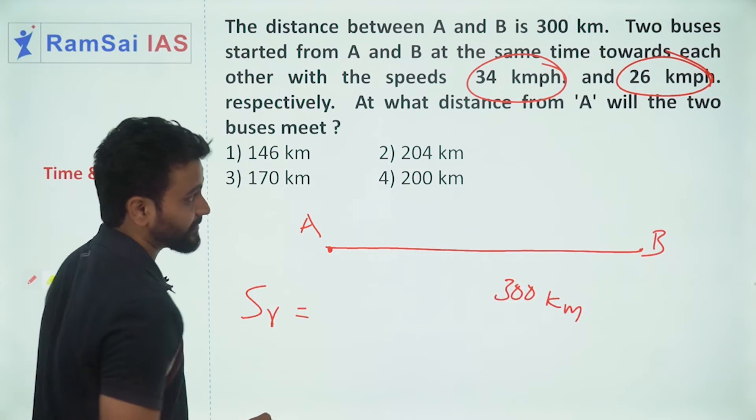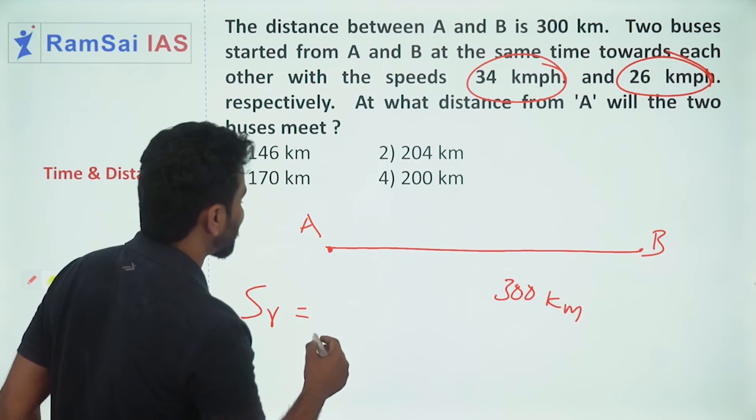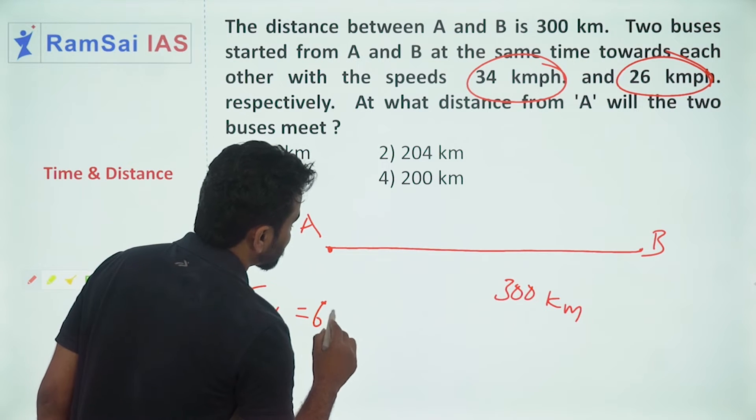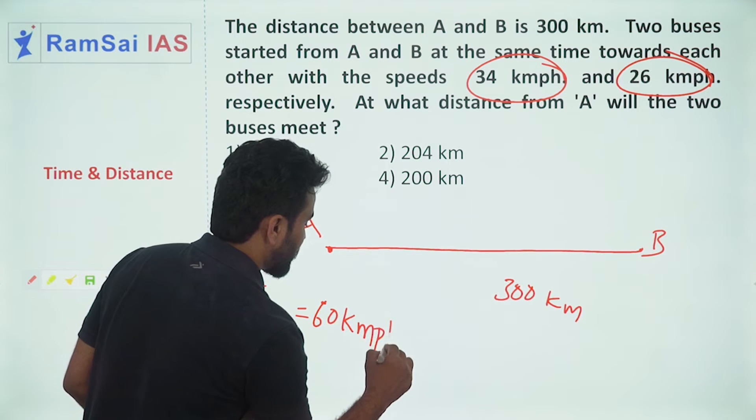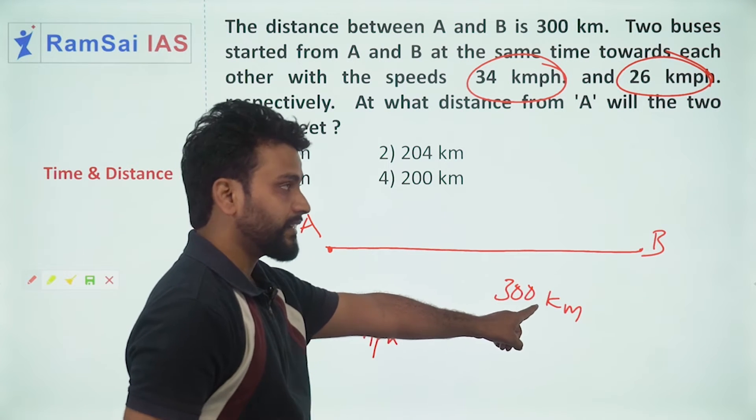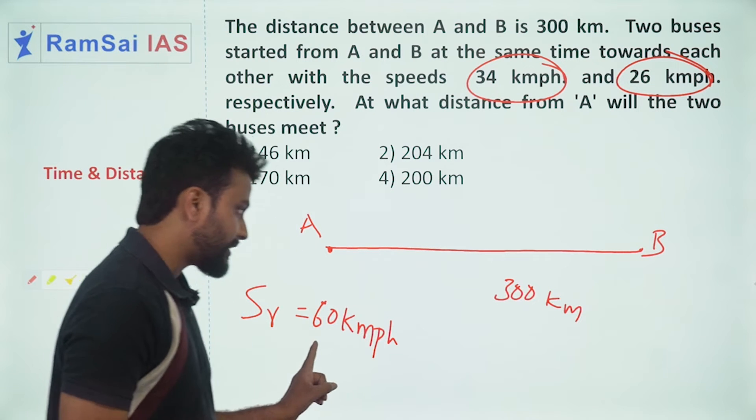As they are moving opposite to each other, the relative speed will be 34 plus 26, that equals 60 kilometers per hour. Now it will be addition. To cover 300 kilometers at a speed of 60 kilometers per hour, obviously they will take total five hours.